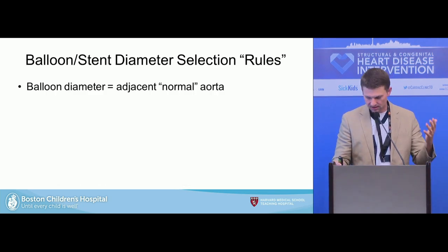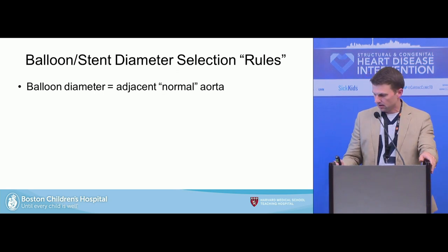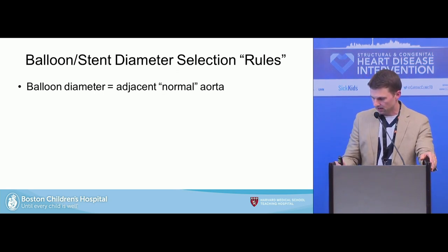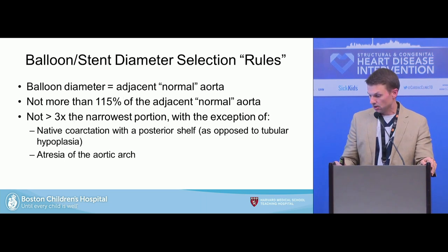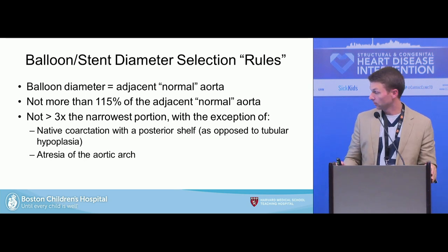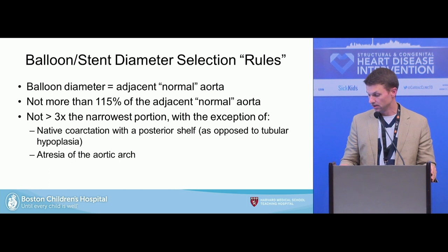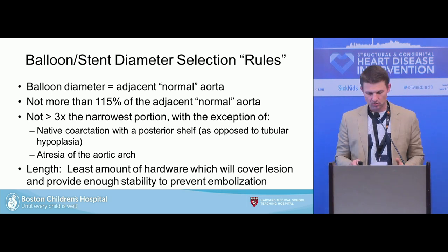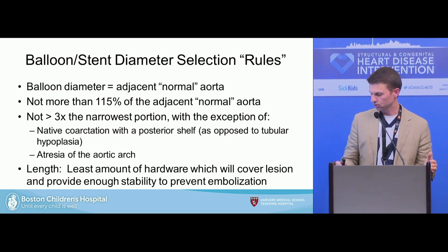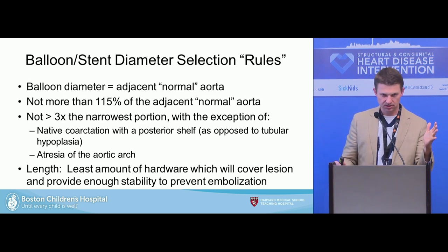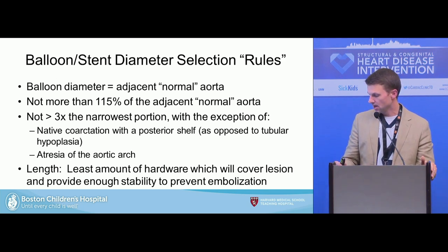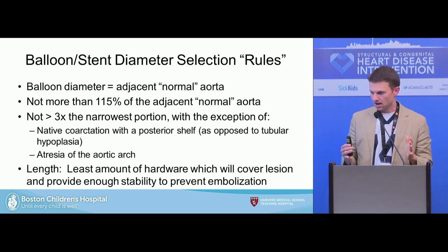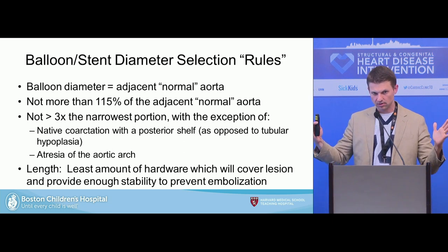How are we choosing your balloon-stent diameter? Your diameter should be equal to the adjacent normal aorta, no more than 150% of the adjacent normal aorta, and no more than three times the narrowest portion — with the exception of native coarctation with a posterior shelf or atresia of the aortic arch. For length, you want the least amount of hardware that covers the lesion while providing enough stability to prevent embolization — typically at least 15 millimeters distal to the obstruction in adults or adolescents, though it depends on anatomy.